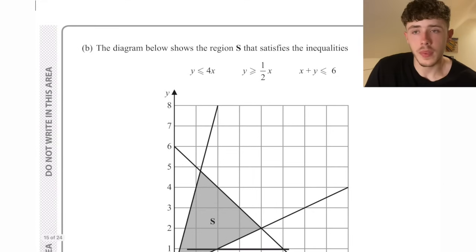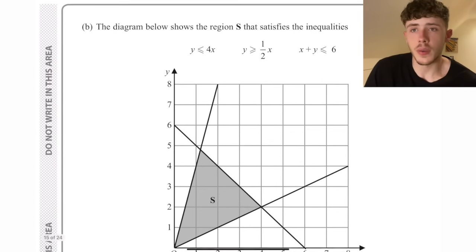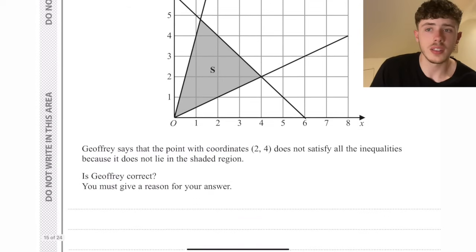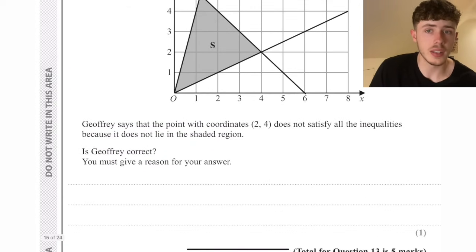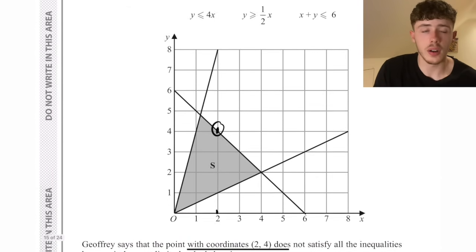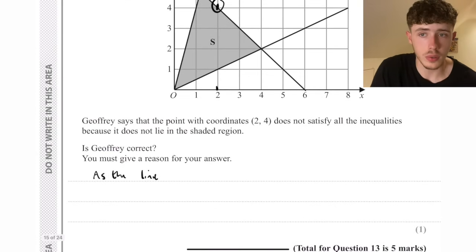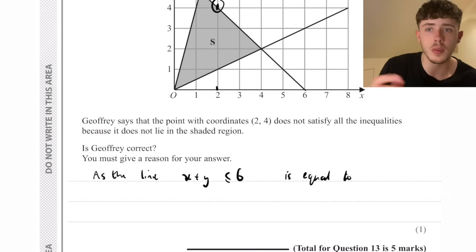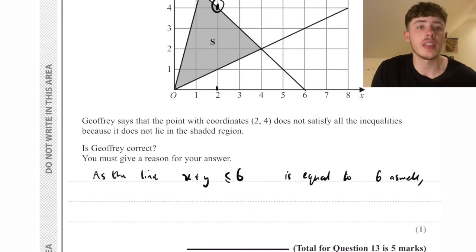We have a part b as well. As you can see, all the inequalities are equal to as well as less than or greater than, and the 0.24 that Geoffrey is asking about lies on the line. Because all these inequalities are equal to as well as greater than or less than, then the 0.24 counts as being within that region basically.